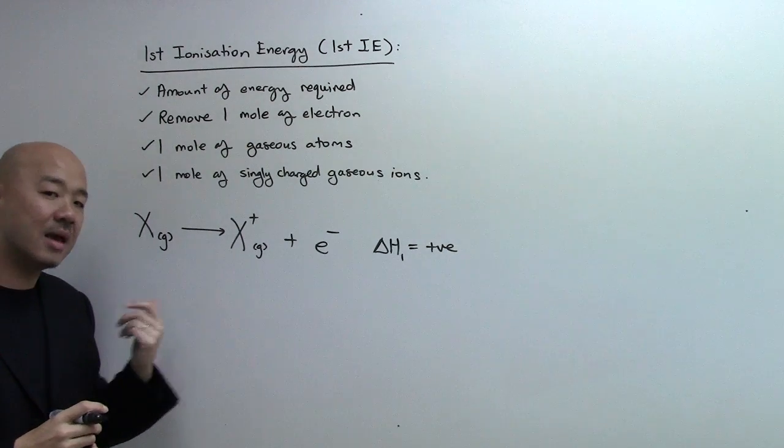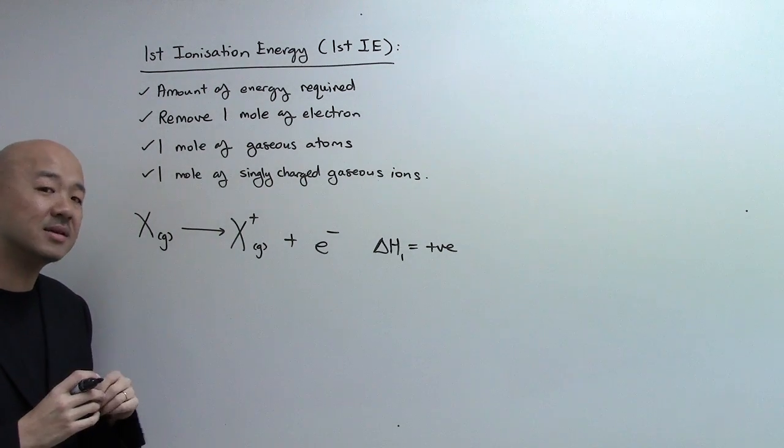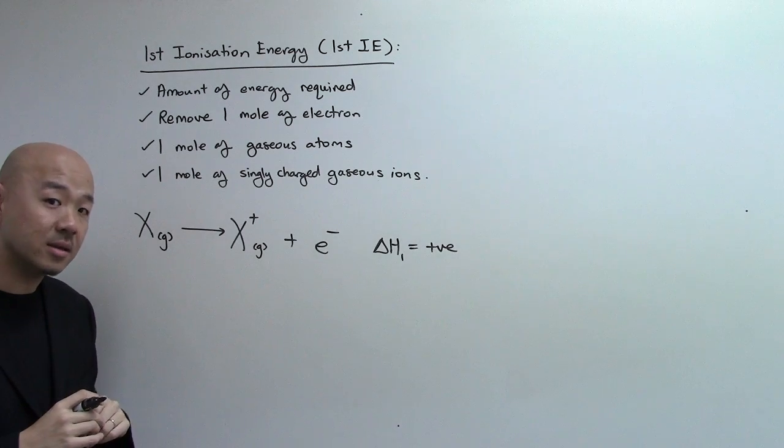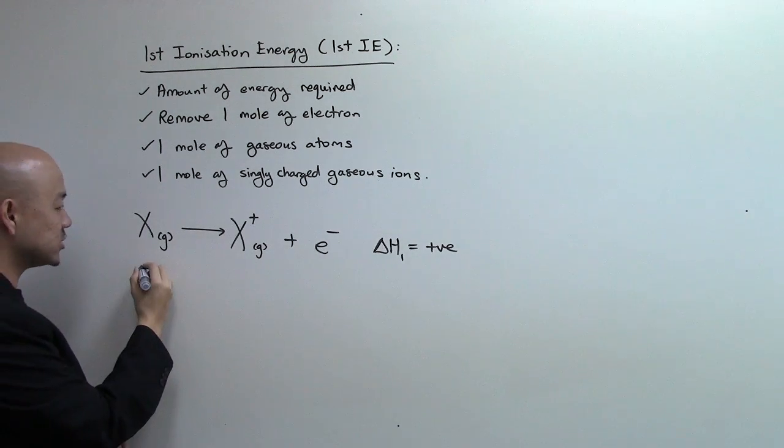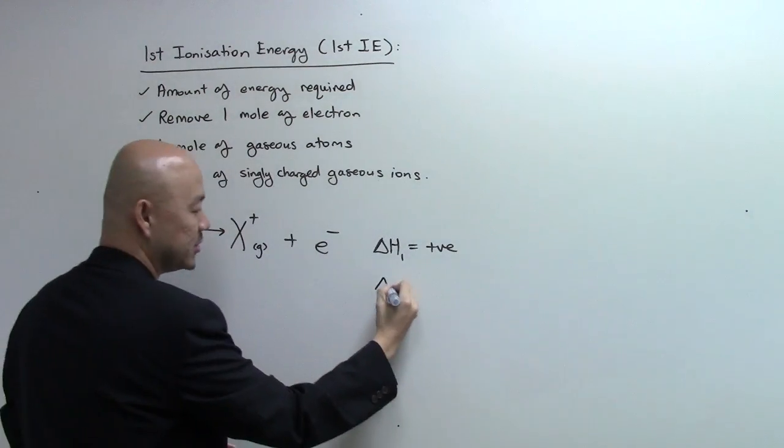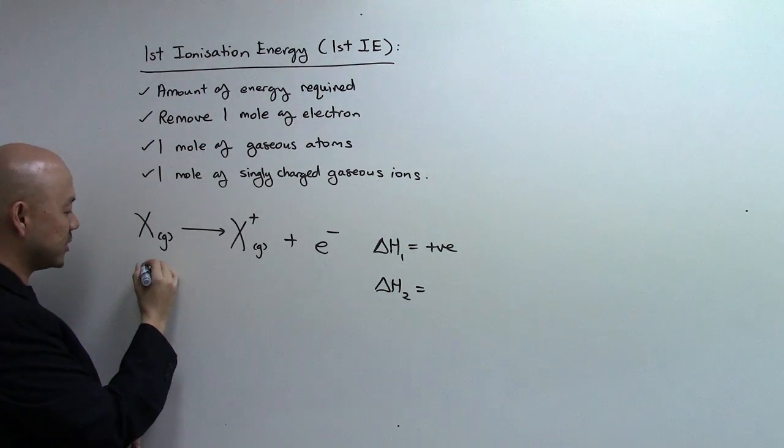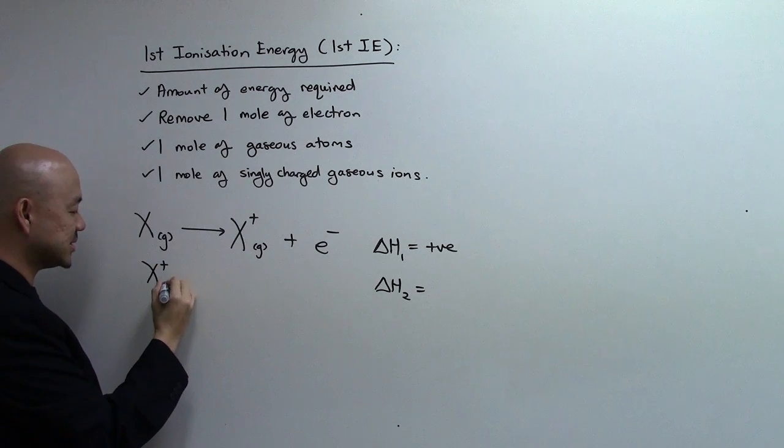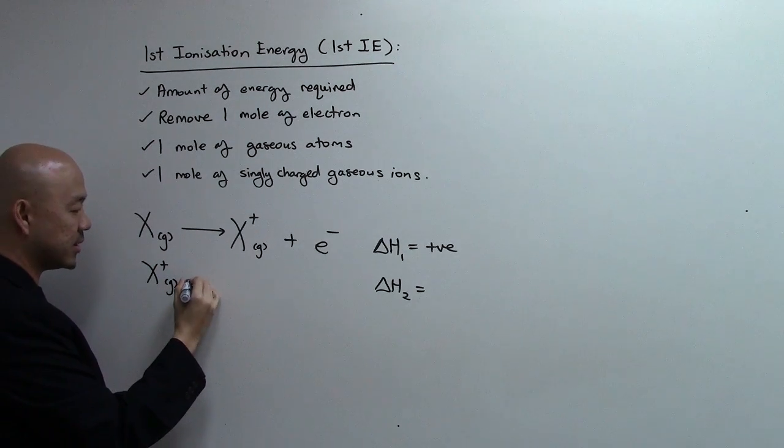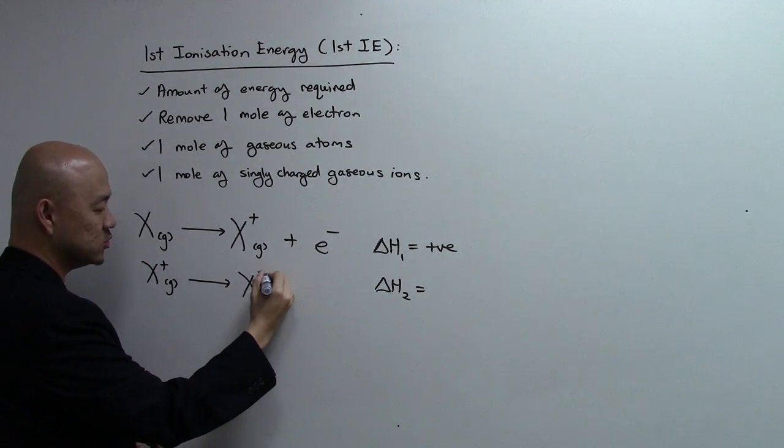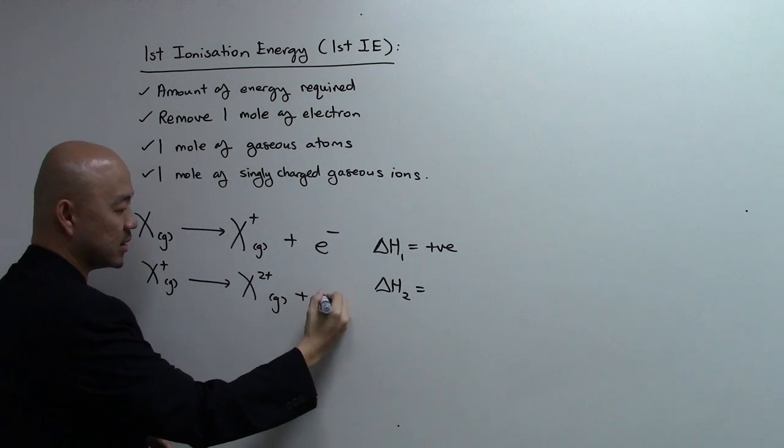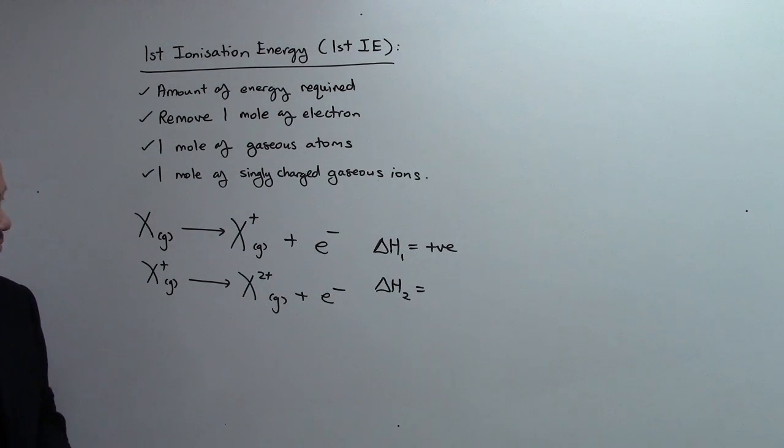Now, looking at this, can examiners ask you on second IE? Obviously, yes. So, what is the second IE then? Let me write the enthalpy change. This will then be X+ becomes X2+, and electron over here.